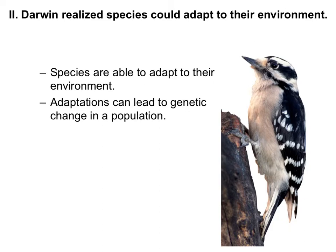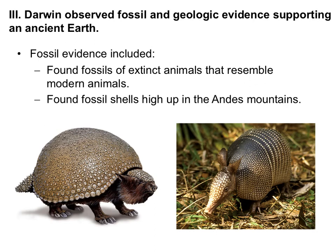This led to his second observation: species are able to adapt to their environment. It's important to note this does not happen in a single generation. If a bird is not fit for its environment, it probably won't survive. But over time, a species can adapt when some individuals are able to survive. Adaptations can lead to a genetic change in a population — if some organisms have adaptations that allow them to survive, they'll have more babies and we'll see more of them in the future.